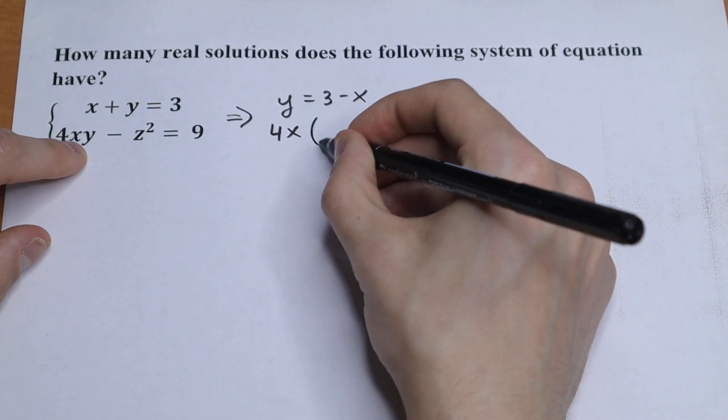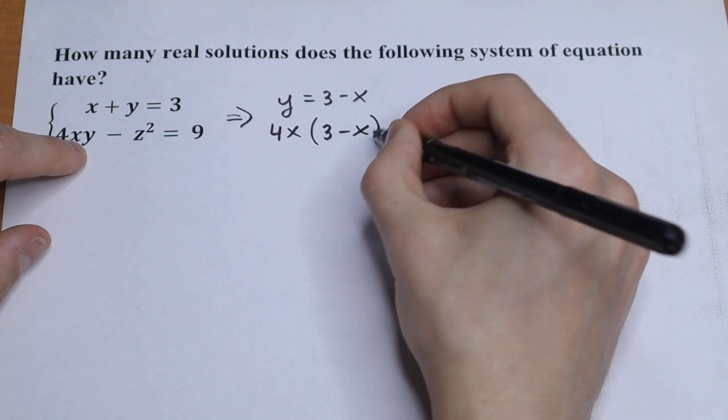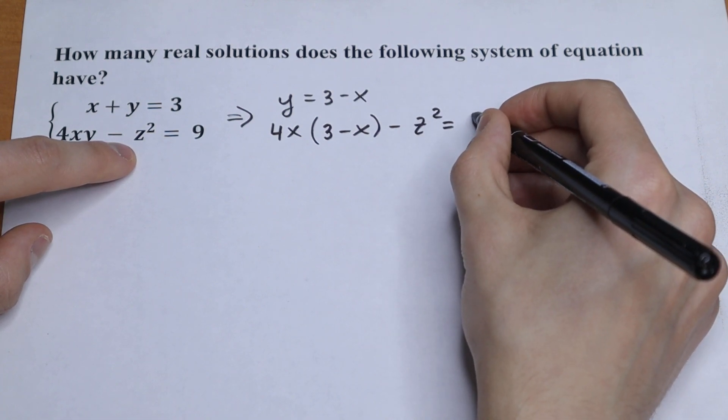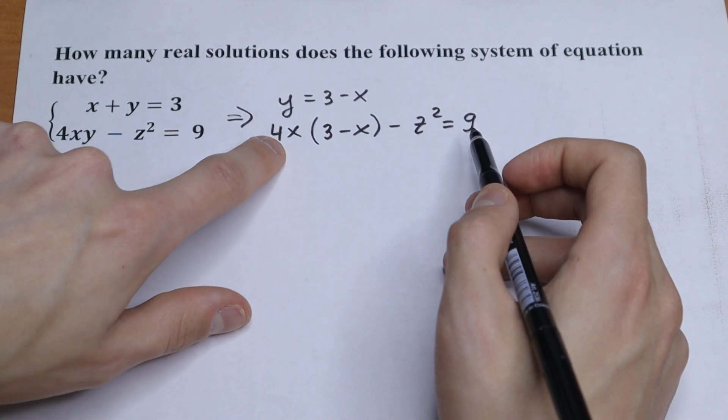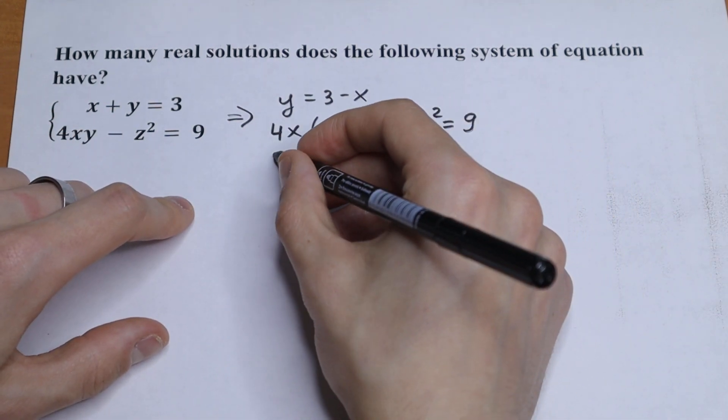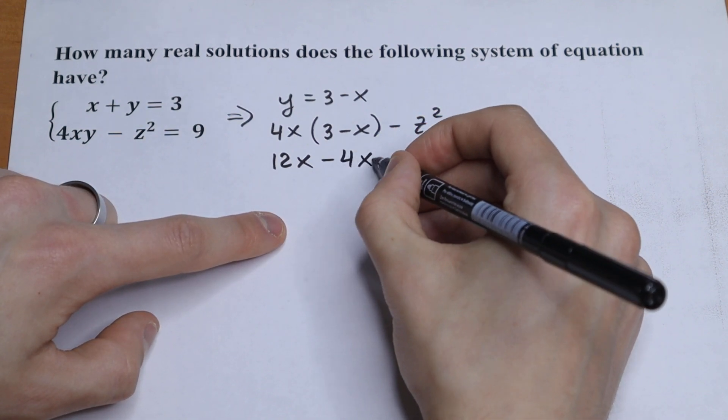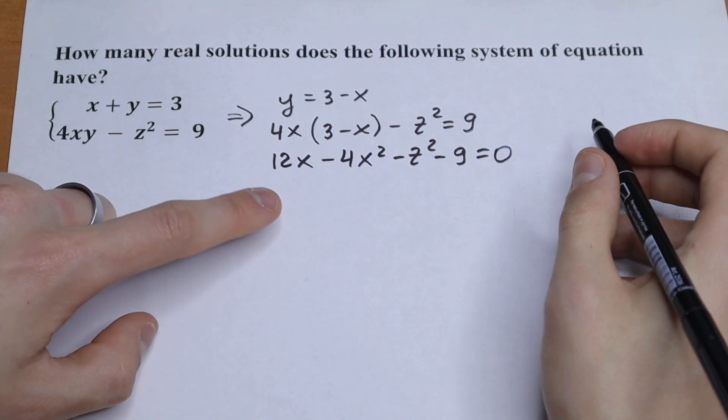Multiplying by 3 minus x, and as a result we will have minus z square equal to 9. So what we are going to do next? Let's simplify this a little bit. 4x times 3 will have 12x minus 4x square minus z square minus 9 equal to 0.